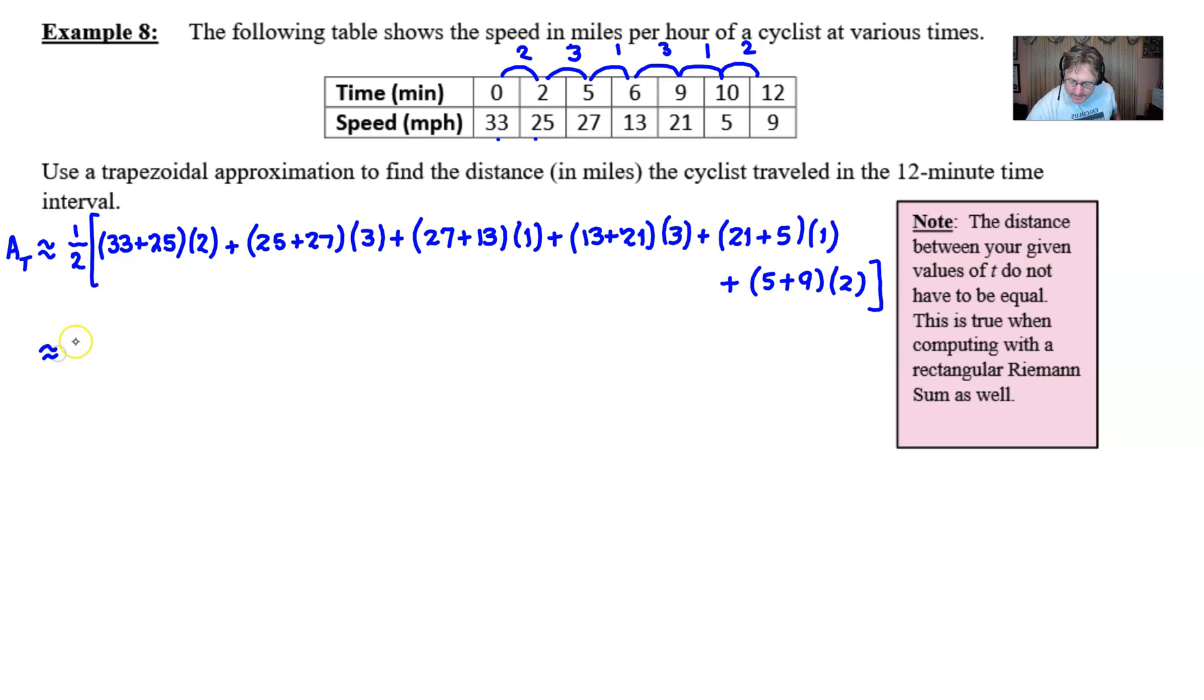So we'll say 33 plus 25 is 58, 58 times 2 is 116. Now I'm reading these values fairly quickly because I'm not going to enter this in a calculator because I think you can pretty much push those buttons. 25 and 27 is 52, 52 times 3 is 156. 27 and 13 is 40, multiplied by 1 stays as a 40. 13 and 21, 34 times 3, I believe is 102.